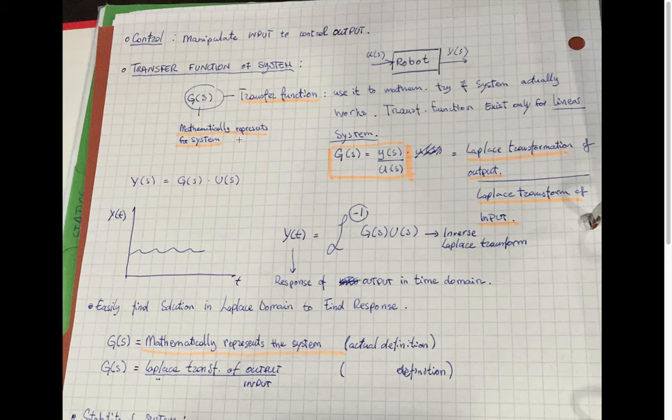The formula is G(s) equals Y(s) over U(s). Y is the output and U is the input, and we have Laplace of the output.